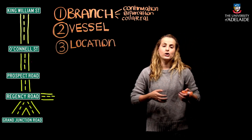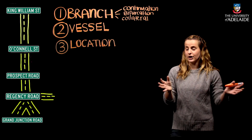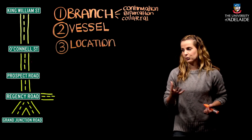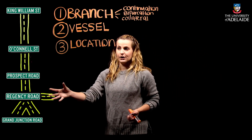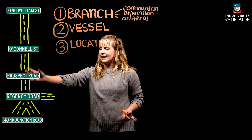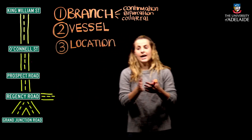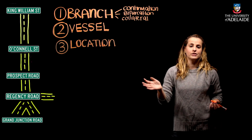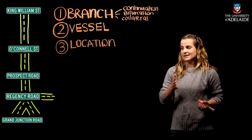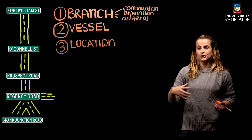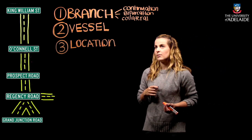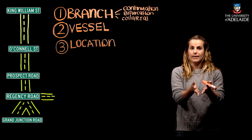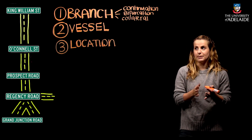A collateral branch is where you have a side street heading in a different direction. An example on our drawing is Regency Road — as soon as you reach the intersection of Prospect Road and Regency, you have the option to turn left or right. For example, turning left down Regency coming off Prospect Road to head to the Kilburn suburb. In the body, an example of a collateral branch is the deep femoral artery, which comes off the main vessel in the thigh — the femoral artery.